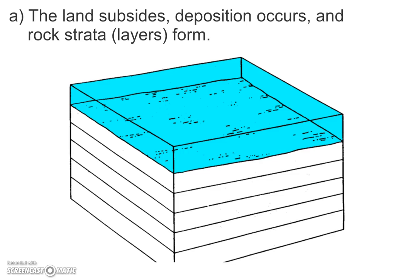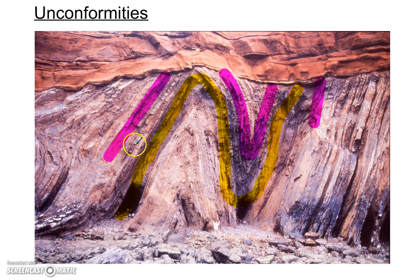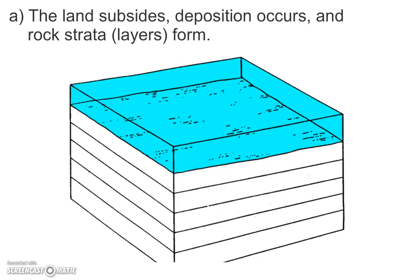So let's take a look at how an unconformity would form. We have strata — layers here. They're not horizontal anymore, but they would have started off horizontal. So at some point, this landscape would have subsided; it would have sunk under the water. Sediments would have been deposited, and rock strata, or layers, would have formed underwater.